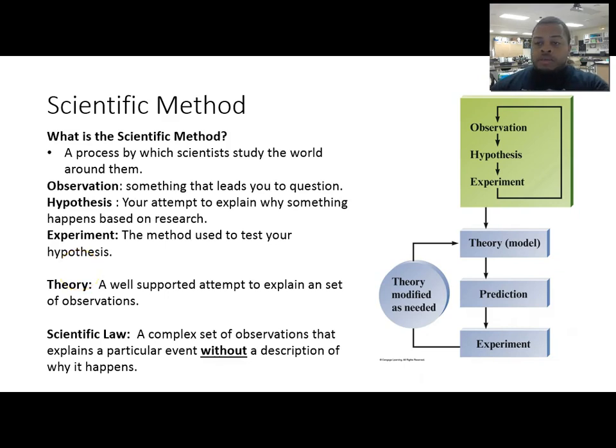It can continue going on through that process if you have to refine your hypothesis and whatnot, or it can go into becoming a scientific law or a scientific theory. What's the difference between the two? Well, a theory like the Big Bang theory or the theory of evolution, or I'm sure there's some other theories we can possibly throw in there.